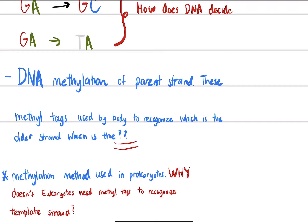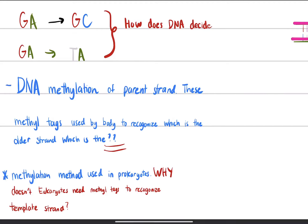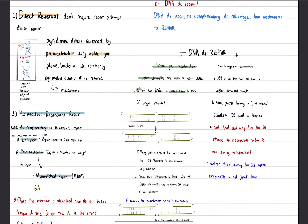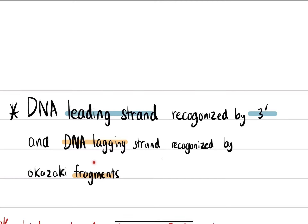Prokaryotes don't use methylation on template strands, and eukaryotic cells don't use DNA methylation at all. Eukaryotes have a more sophisticated answer: they recognize the leading strand or lagging strand using the 3' end, and the lagging strand can be recognized right away by the Okazaki fragments. This mechanism allows eukaryotic cells to immediately distinguish the template strand from the newly synthesized strand.